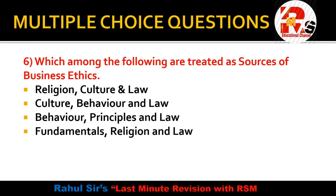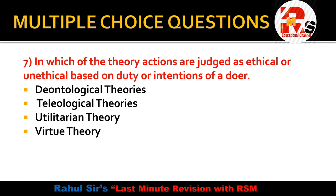Question number 6: Which among the following are treated as sources of business ethics? The options are: Religion, Culture and Law; Culture, Behavior and Law; Behavior, Principles and Law; or Religion and Law. You can notice that Law is common across all options. If we talk about the three sources of business ethics, they are Religion, Culture, and Law — so that is the right answer.